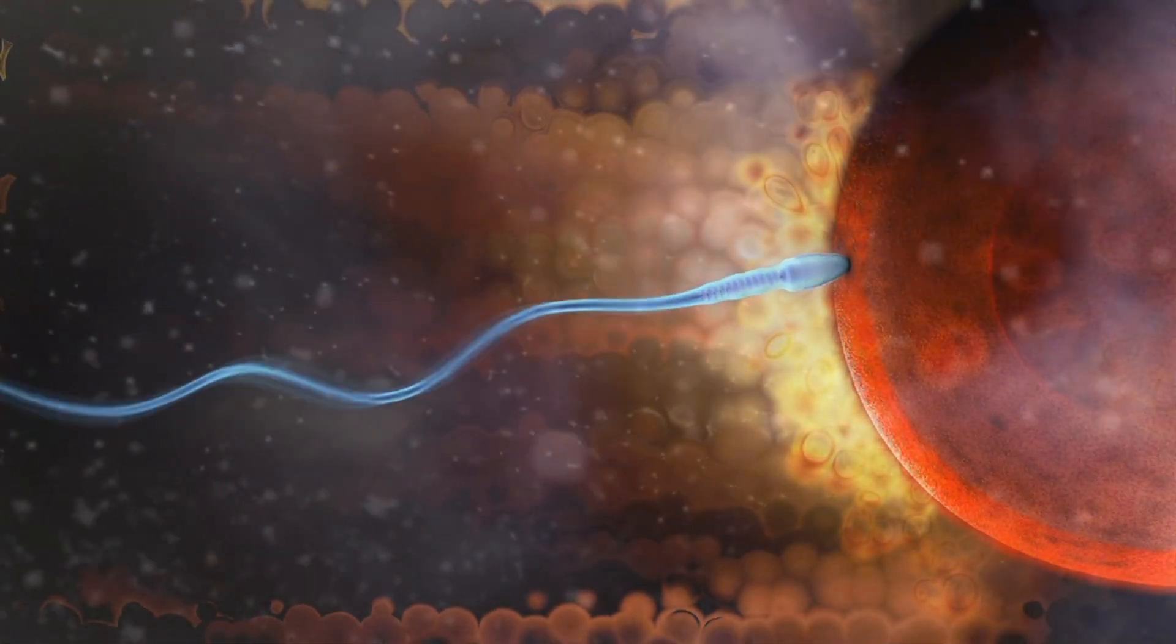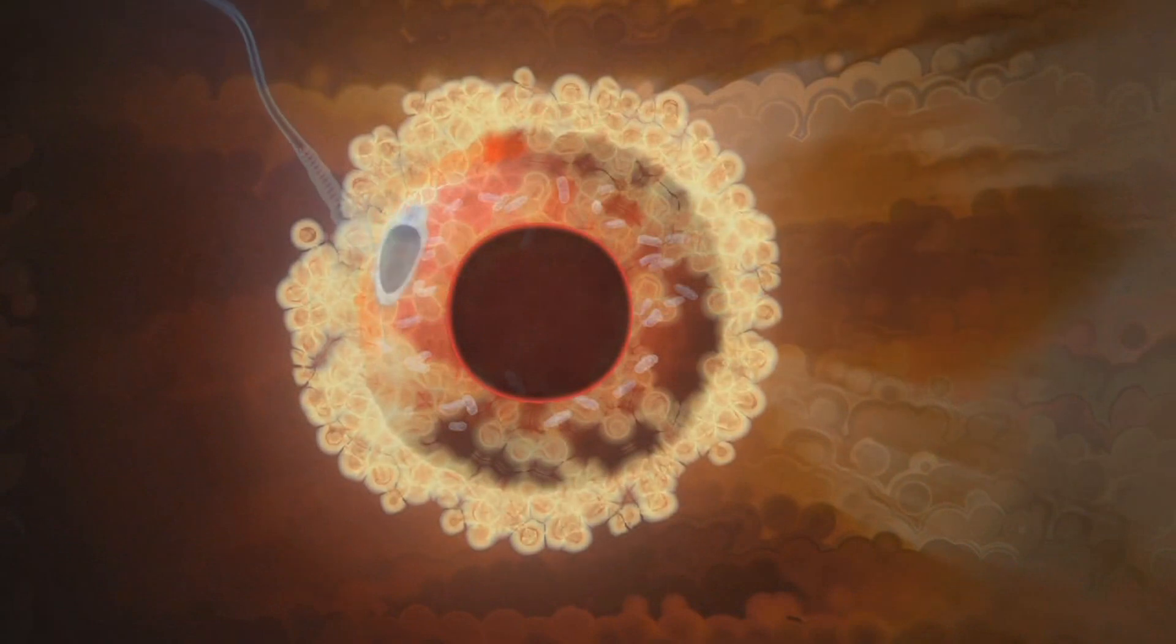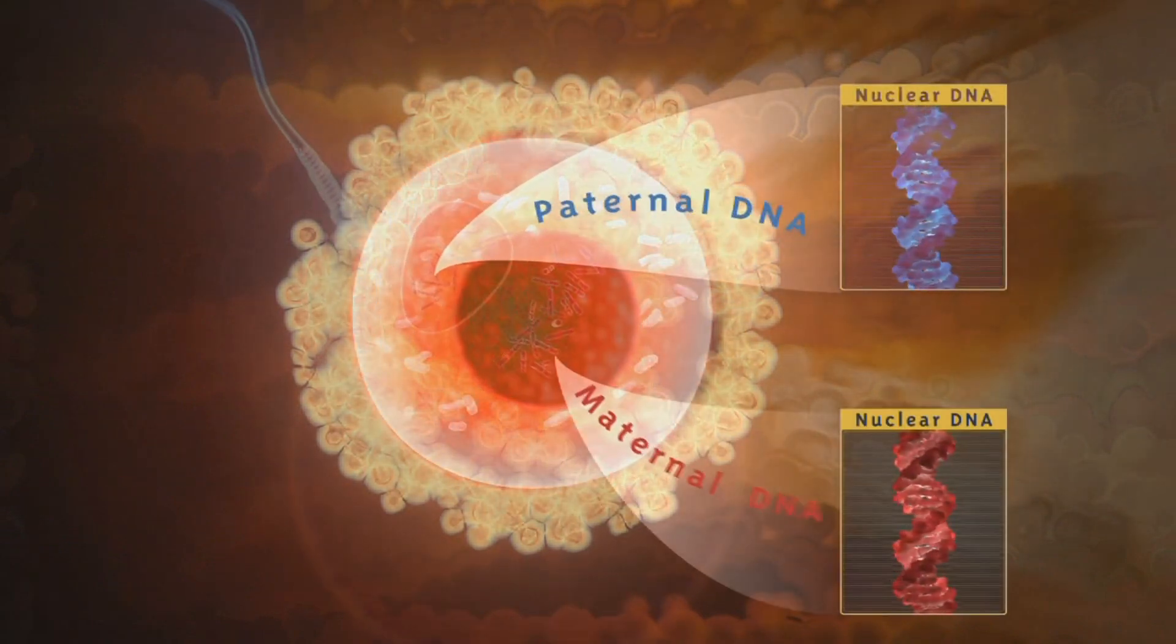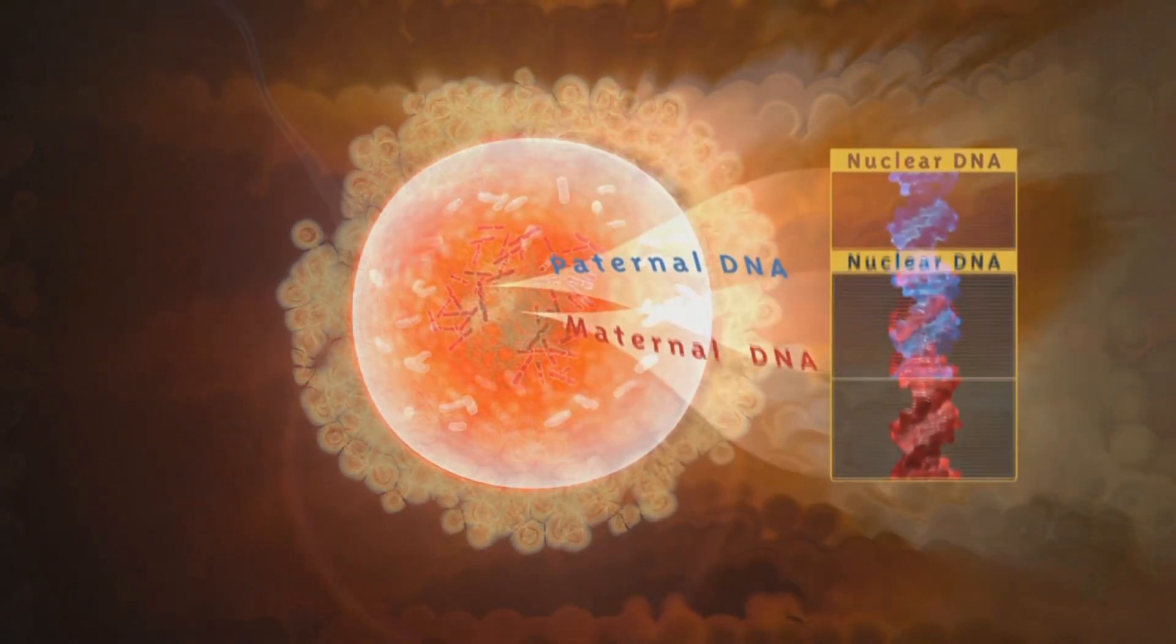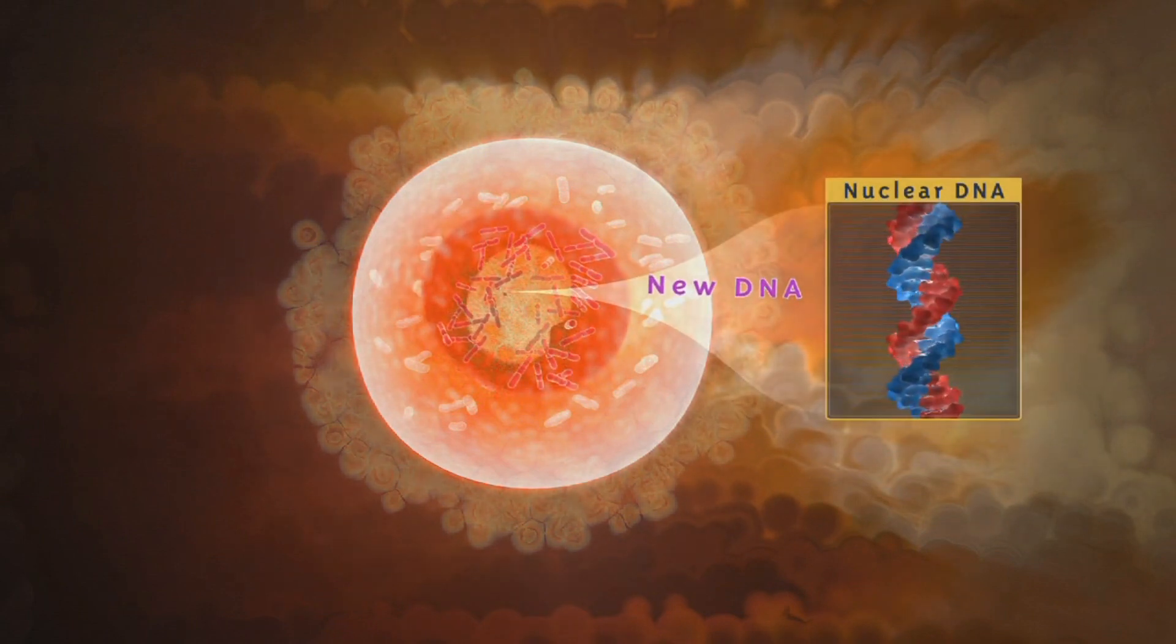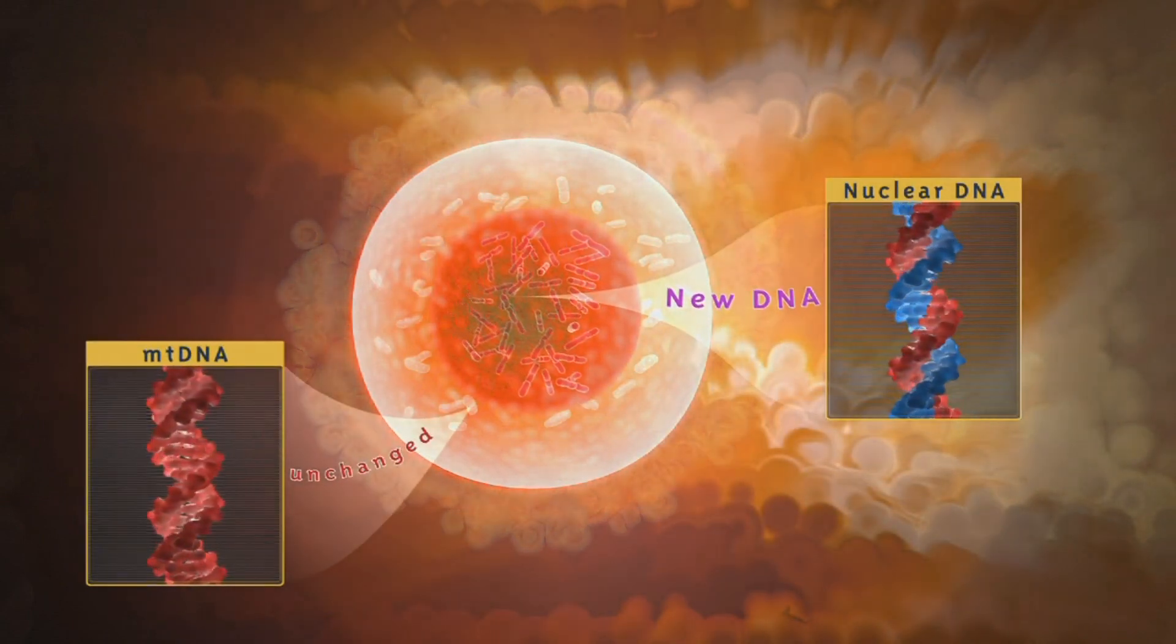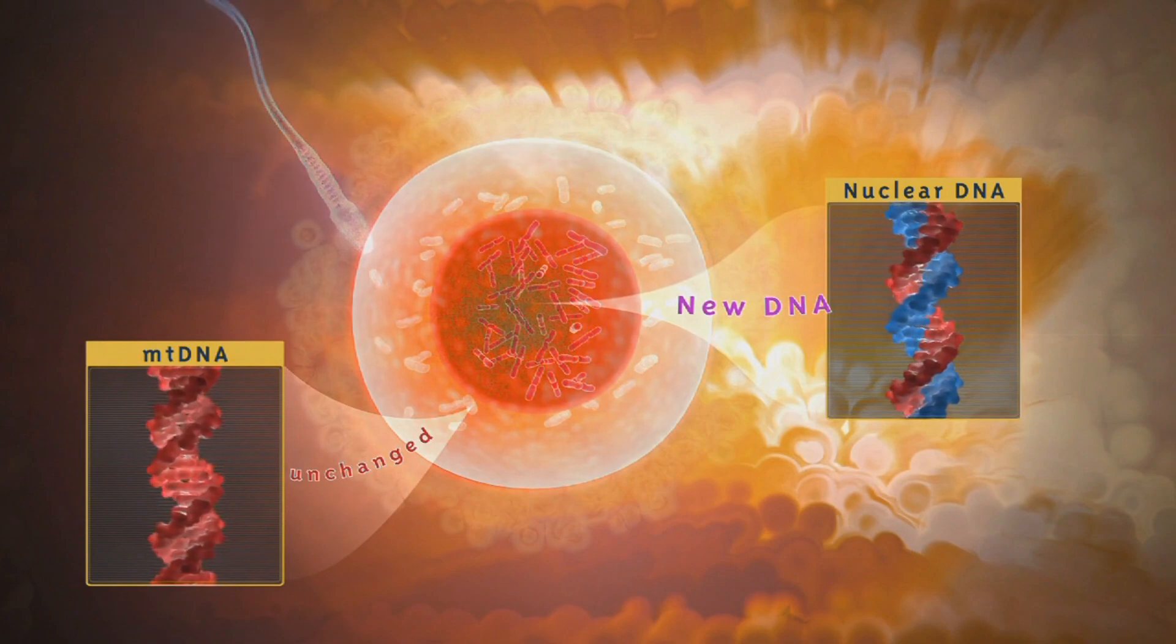When an egg cell is fertilized, the 23 chromosomes from the nucleus of a sperm cell join the 23 chromosomes inside the egg. The egg cell's mtDNA remains unaffected, while the sperm's mtDNA is left behind.